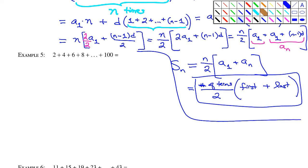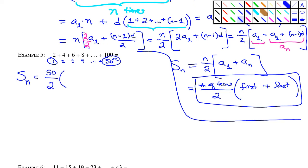Example 5: find the sum 2 plus 4 plus 6 all the way up to 100. To use the s sub n formula, I need to know how many terms there are. The first term is 2, second is 4, third is 6 — so 100 must be the 50th term, meaning there are 50 terms. So s sub 50 equals 50 over 2 times (2 plus 100), giving 25 times 102, which equals 2550.